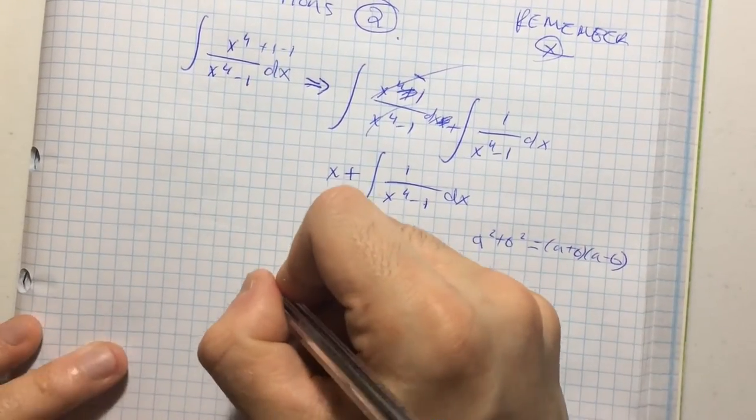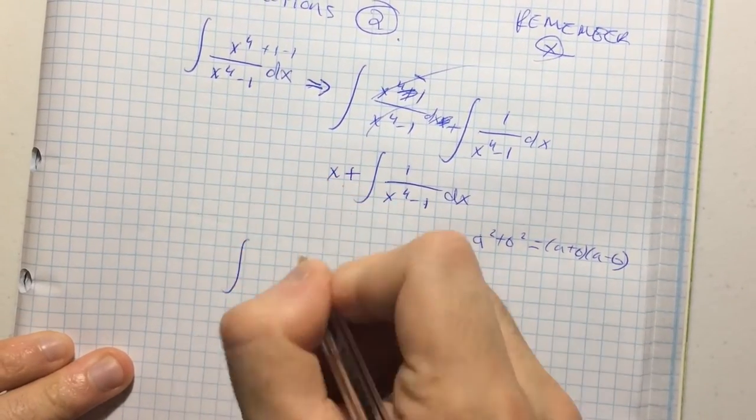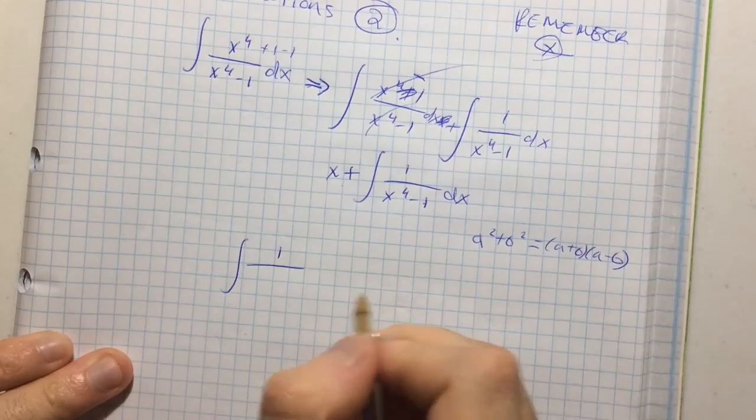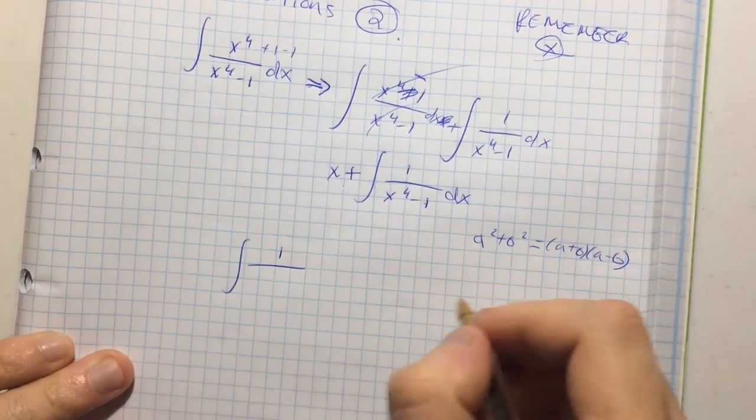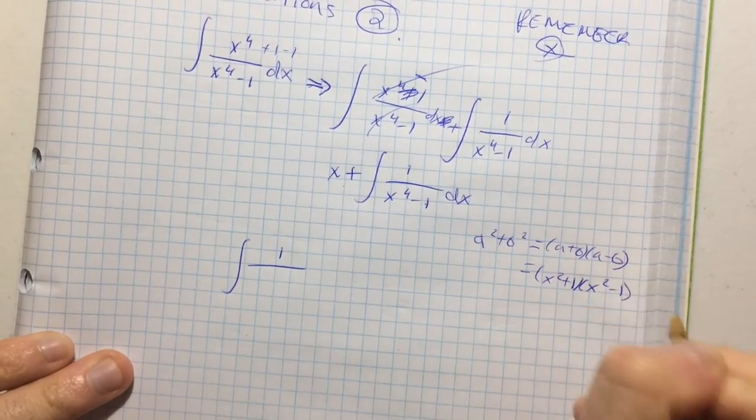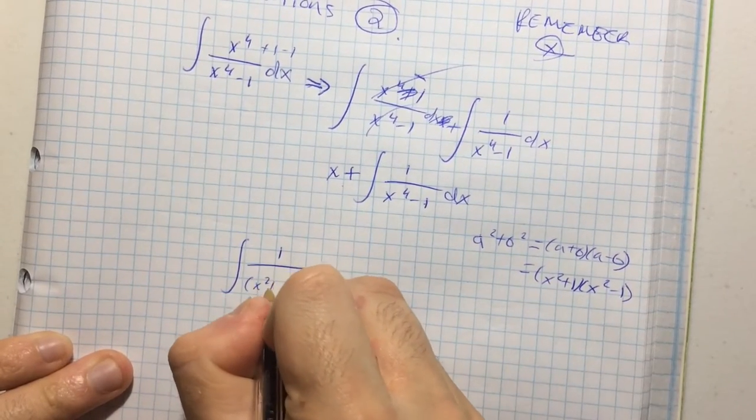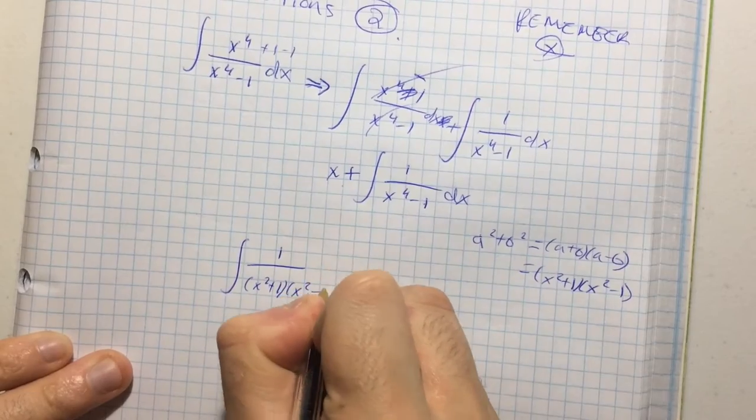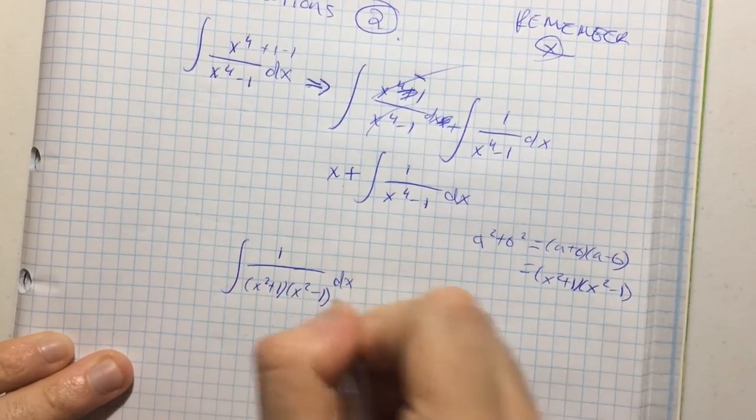So, let's rewrite that integral. So, the integral of one over x to the fourth minus one is now one over x squared plus one, x squared minus one. Like this dude over here. And the best part is,